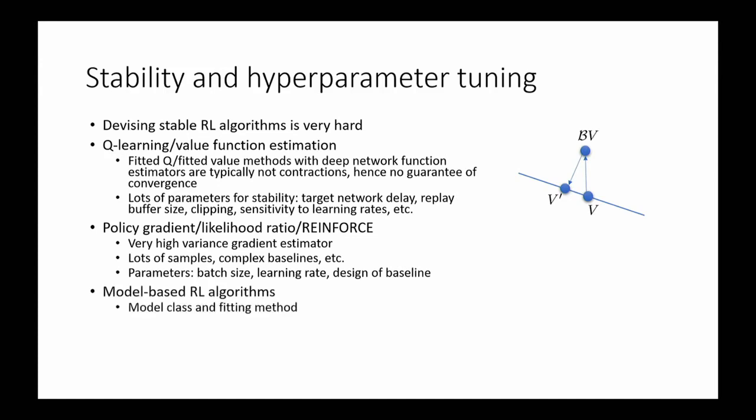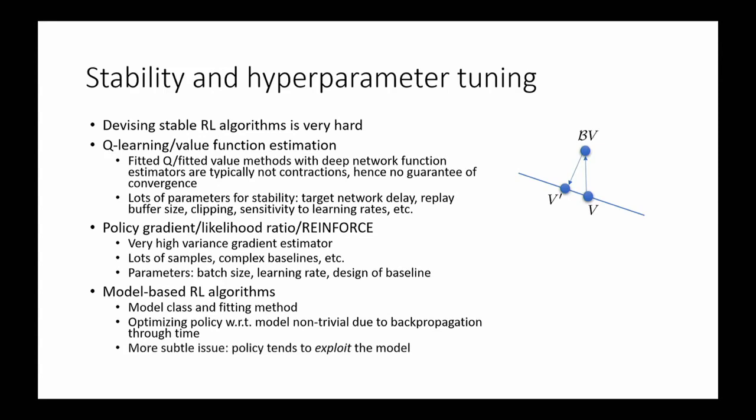For model-based RL algorithms, there are choices like model class and fitting method, but perhaps the bigger challenge is that there isn't any guarantee that a more accurate model will lead to better performance. The model can be made more accurate in many ways, but if it misses that one really critical thing needed for a good policy, the policy can be arbitrarily bad. Not all model errors are equal, and simply reducing model error doesn't necessarily improve policy performance — there's essentially an objective mismatch.